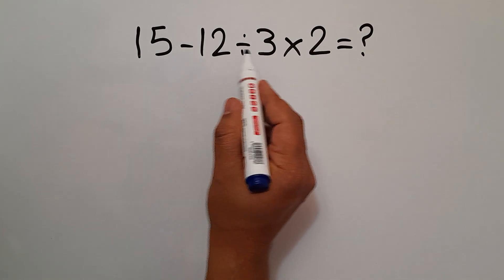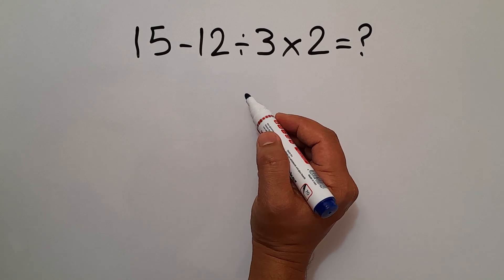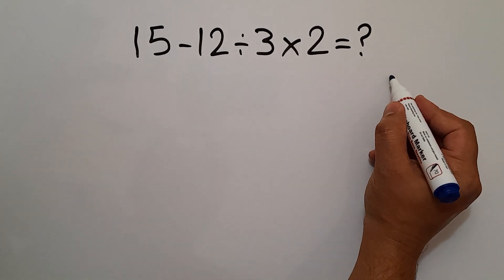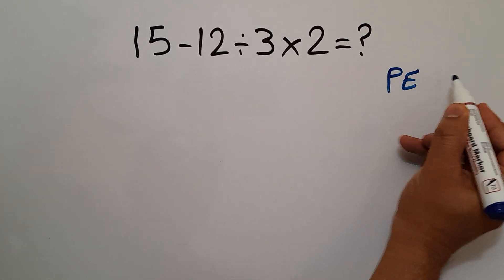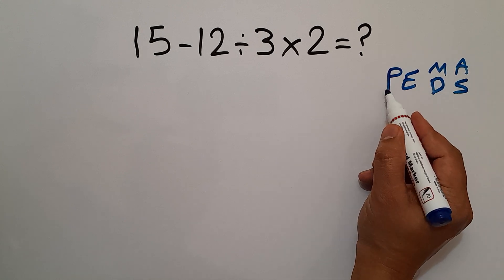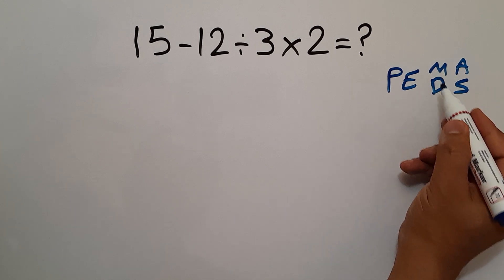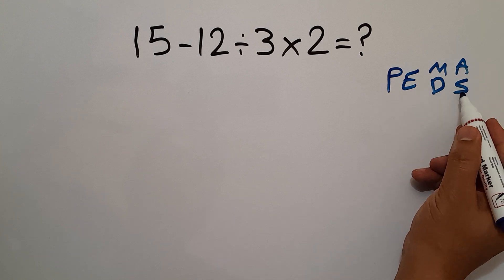According to the order of operations, which is PEMDAS: P stands for parentheses, E stands for exponents, M and D stands for multiplication and division, and A and S stands for addition and subtraction.